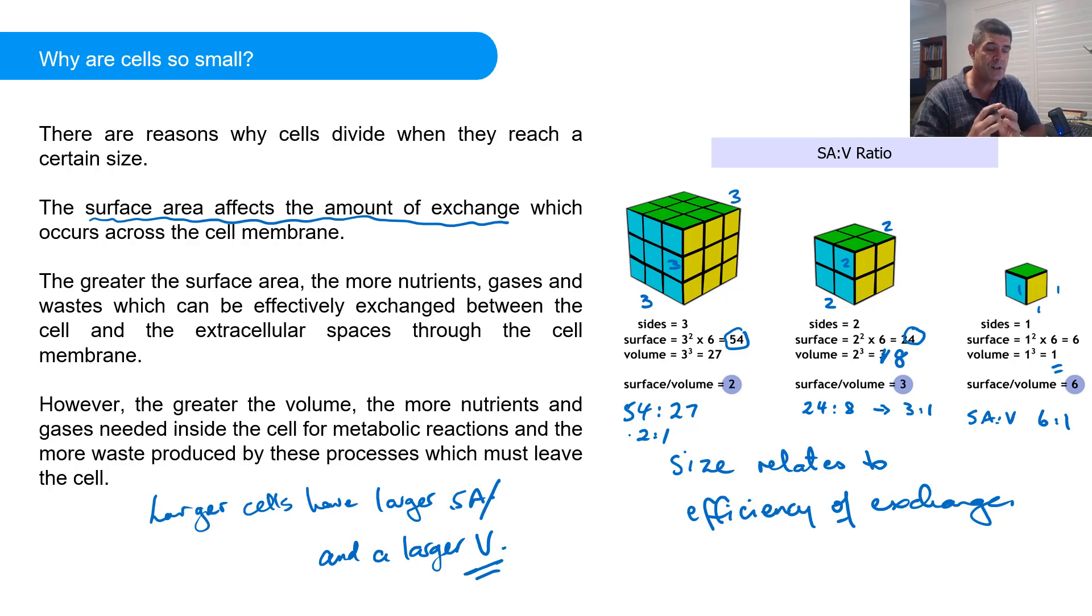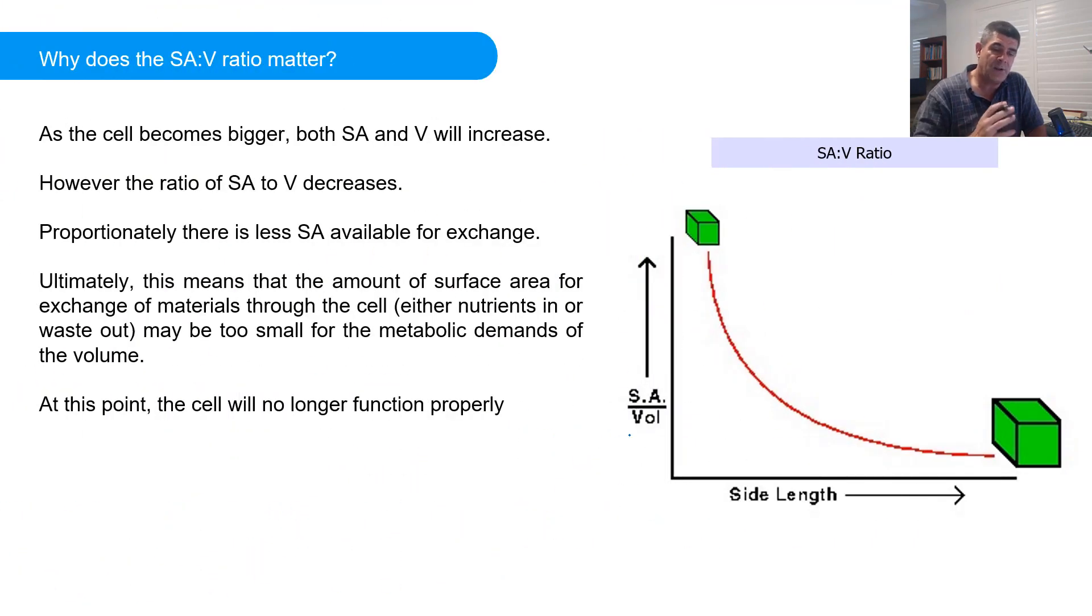Now surface area is important for exchange. We've got to get material into the cell. We've got to get nutrients. We've got to get particular gases. And we've also got to get material out of the cell. Again, maybe gases produced from processes that we don't want, waste products from metabolic processes that we don't want in the cell. All of those have to be moved backwards and forwards across the cell membrane. The problem that we have is the greater the volume, the more nutrients and gases and wastes are going to be exchanged. And therefore, we need to have an efficient system in order for that to happen. And unfortunately, as these cells get bigger and bigger, the surface area available for that exchange compared to the volume gets smaller and smaller. And therefore, cells become less efficient as they get larger.